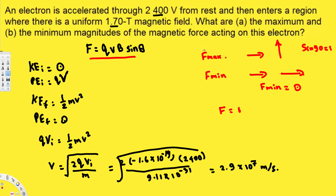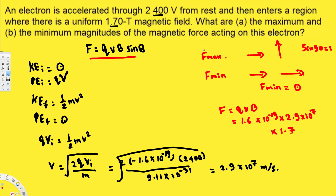So F_max = qvB. The charge of the electron — since we're calculating magnitude — is 1.6×10⁻¹⁹, times the velocity 2.9×10⁷, times the magnetic field 1.7 tesla. Calculating this gives 7.9×10⁻¹² newtons, and that is the maximum force. That's how we solve this kind of problem.